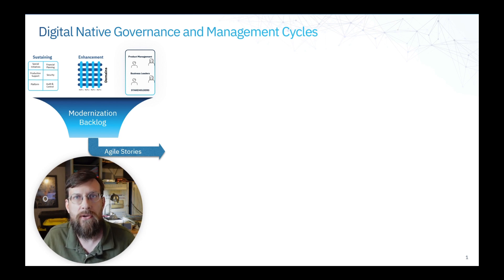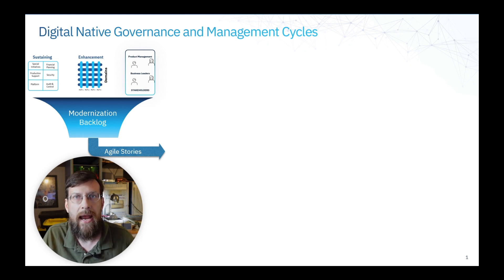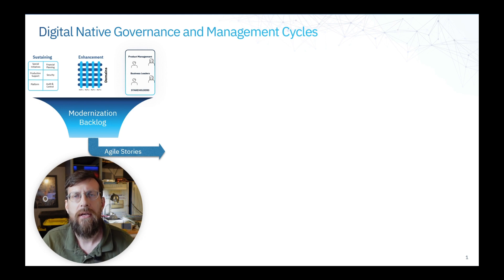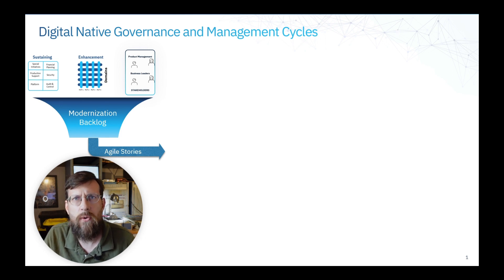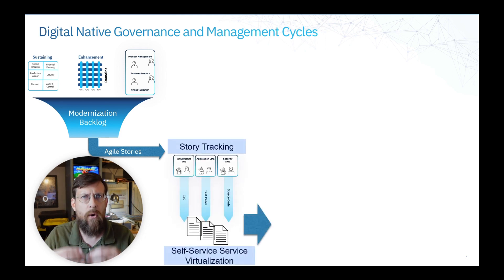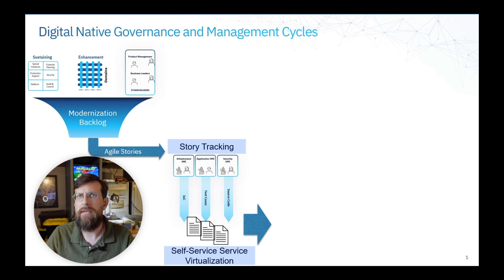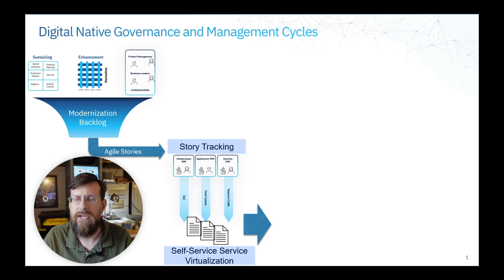All of that goes into a backlog and creates a set of Agile stories. Agile stories are a describable unit of work, commonly called a user story, which says that I, as a user or stakeholder, want this to be done. Those Agile stories end up going into our JIRA backlog — or some kind of story backlog. We've got our SMEs who work on it: an infrastructure SME, a security SME, and an application SME or developer.